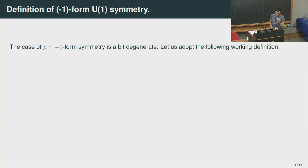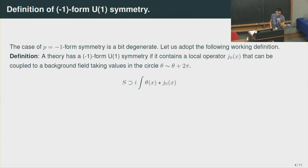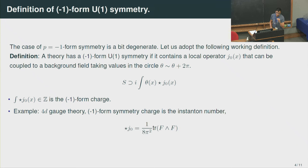The case P equals minus one is a bit degenerate, so we adopt the following definition: a theory has a minus-one form U(1) symmetry if there is a local operator J0 which can be coupled to a background field taking values in the circle, with a coupling of this form. The property is that the integral of S_U is quantized, and we call this the minus-one form symmetry charge. The example I have in mind is a four-dimensional non-Abelian gauge theory where the minus-one form symmetry charge is the instanton number.